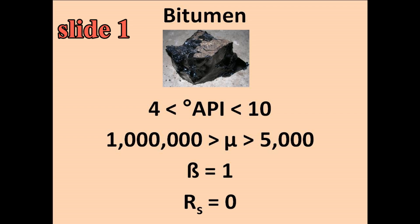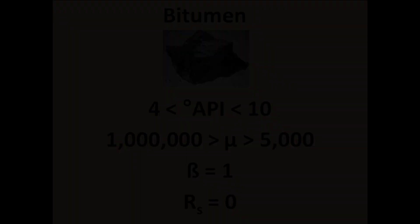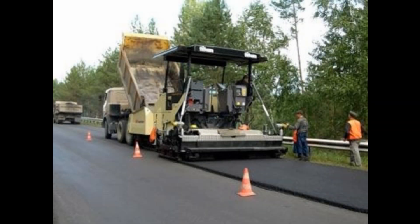We also see that bitumen's viscosity, or mu, is very high. This means that its flow rate is very resistive and probably won't flow without heat or other chemicals being applied. Both beta at one and RS at zero indicate there is no solution gas. Bitumen, as you might guess, is used mostly in highway construction.